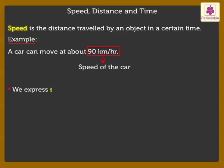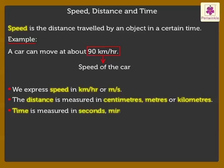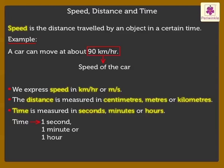We express speed in kilometer per hour or meter per second. The distance is measured in centimeters, meters, or kilometers. Time is measured in seconds, minutes, or hours. Time as one second, one minute, or one hour is called unit time.